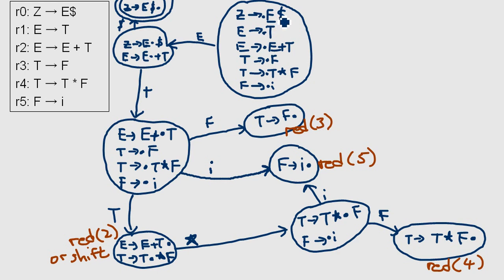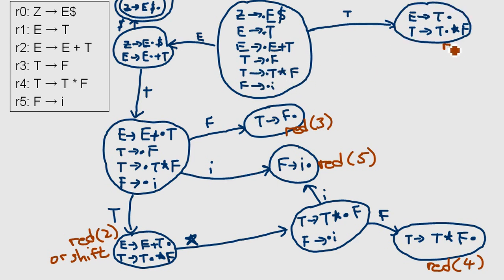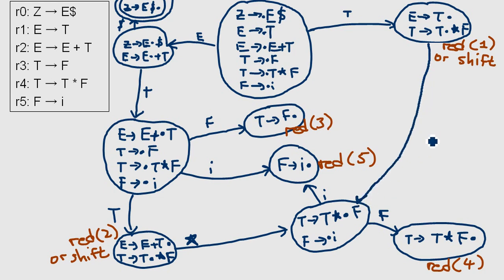Let's go back and finish this one off. We have the input E, so next we want to check input T. We have to take the other rule into account, and once again we have a reduction — this rule will reduce by rule number one, or we have a shift if the next input is a star. The star brings us down to an existing state. Then we check F, which brings us to another state, and 'i' which brings us to yet another state.